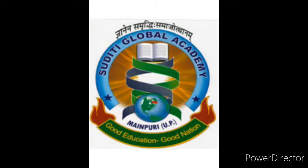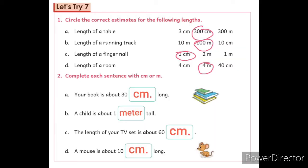So, today I am going to solve Let's Try 7. So, let's begin. Let's Try 7, question number 1: Circle the correct estimates for the following lengths.